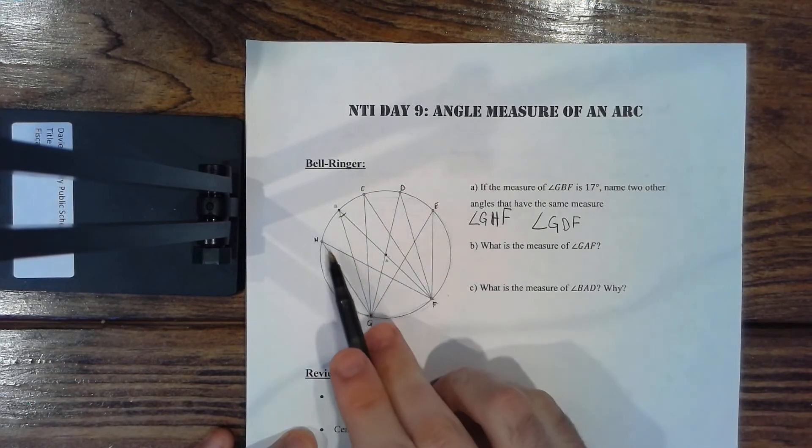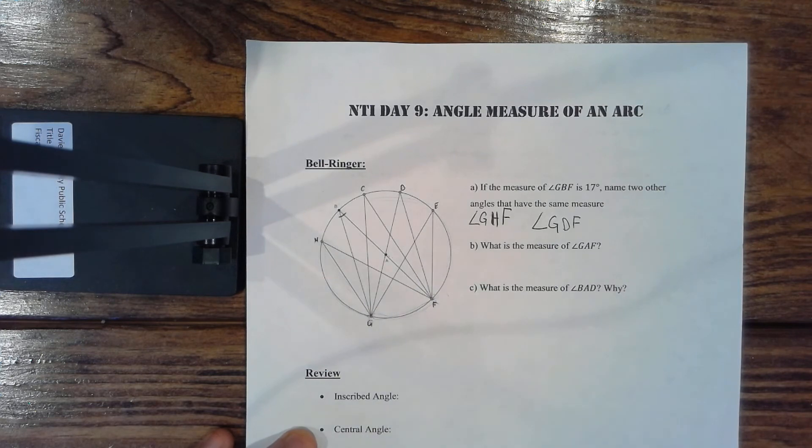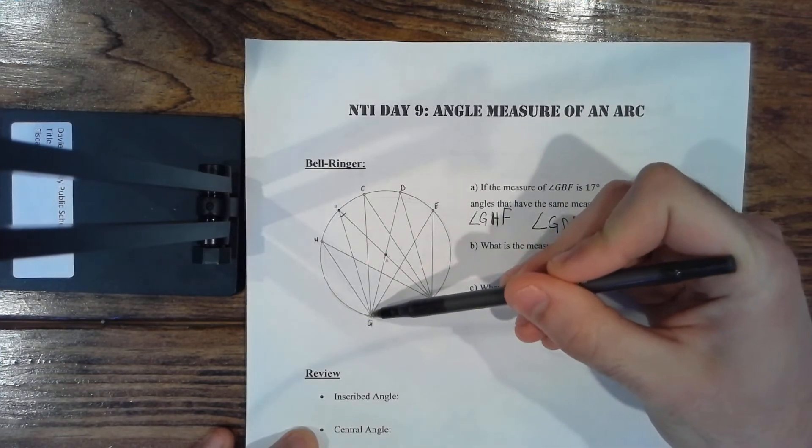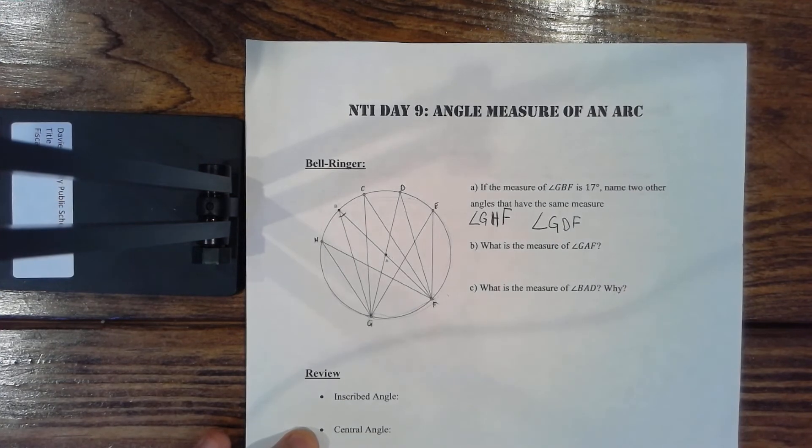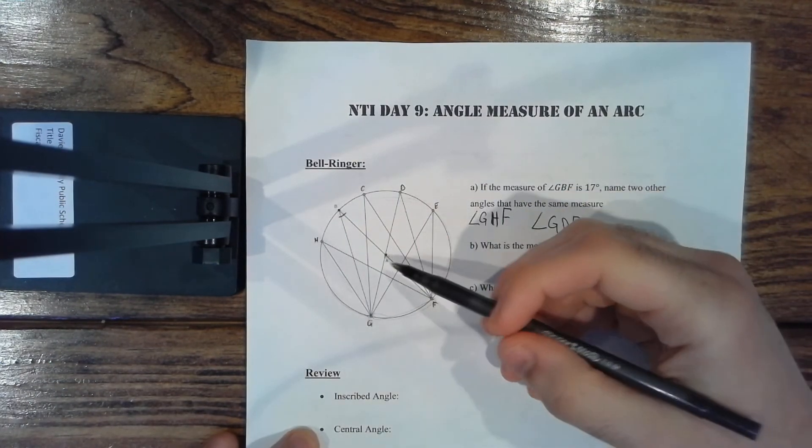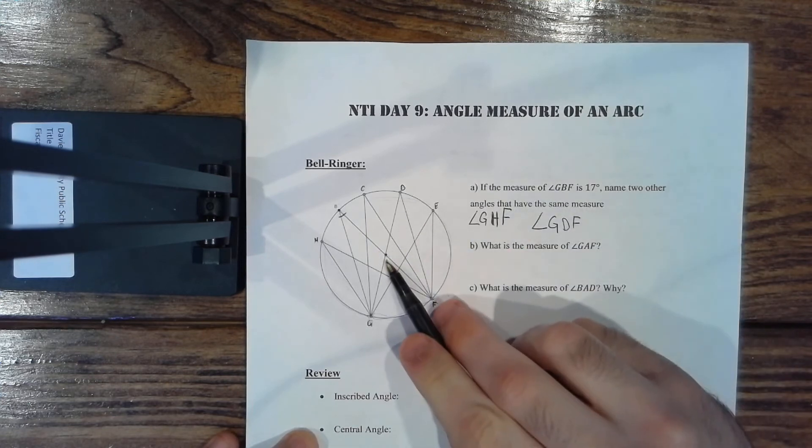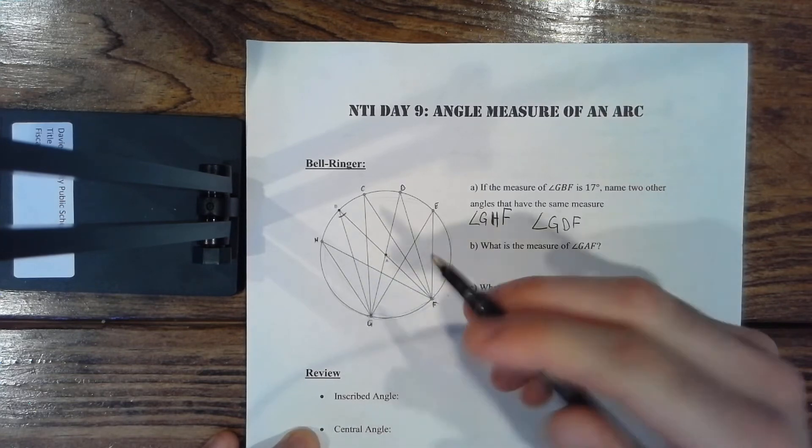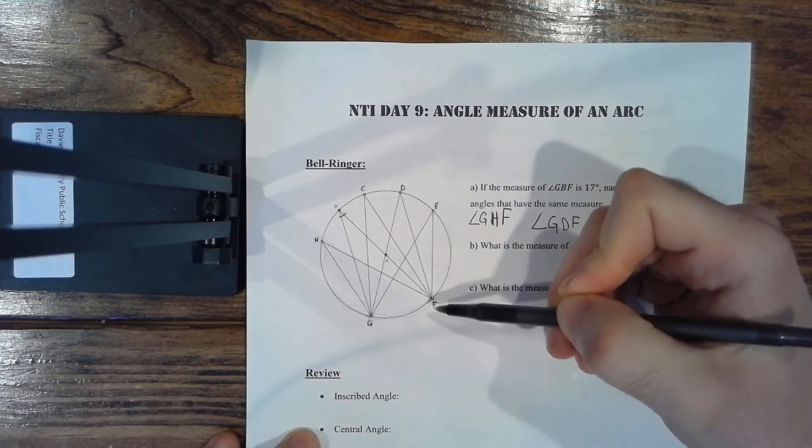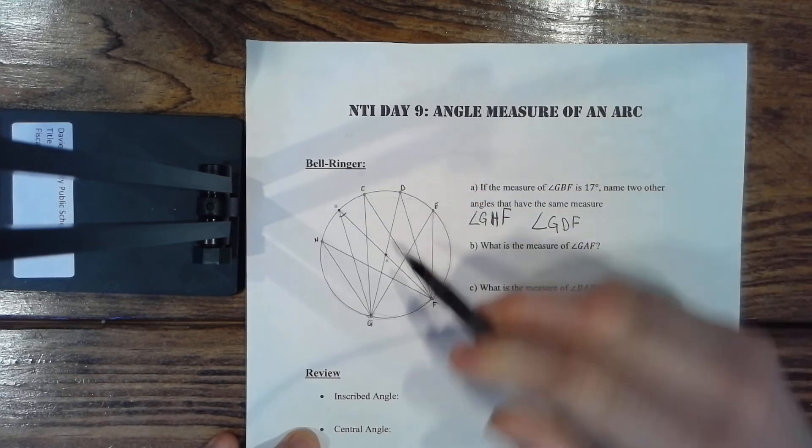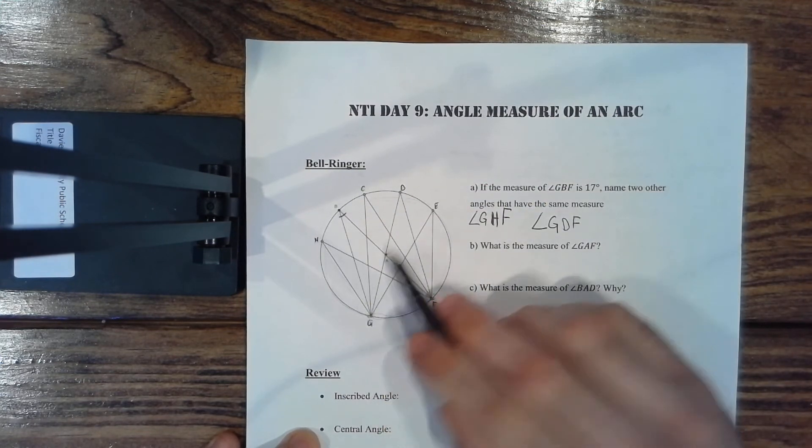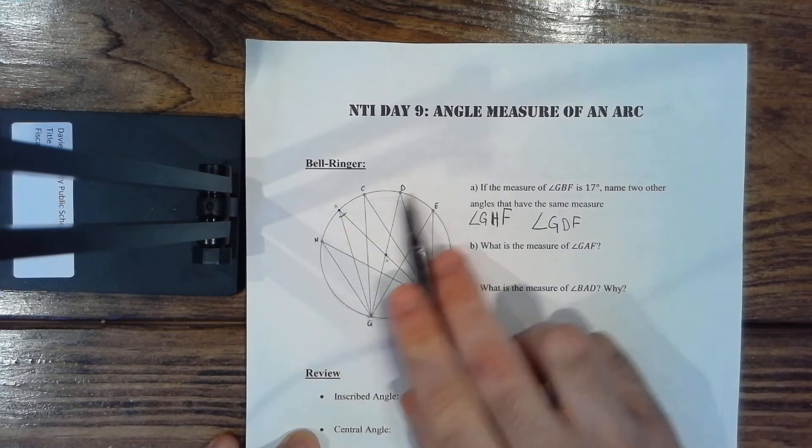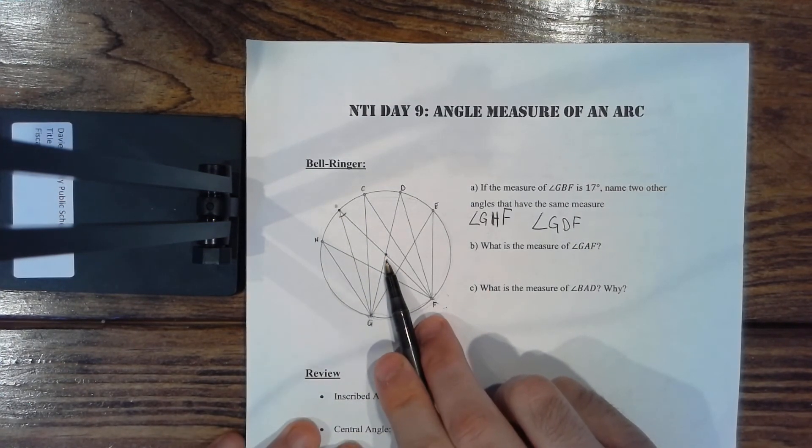Okay, what is the measure of angle GAF? So GAF. Okay, well if you remember back from a couple lessons ago, GAF is my central angle because A is the center of the circle. My central angle is going to be two times larger than my inscribed angle. Well, GDF or GBF, or I guess these are mainly the only two that go through A. Yeah, so GBF and GDF, really all of these are going to be half the size of my central angle because again, the central angle is twice as large as my inscribed angle.